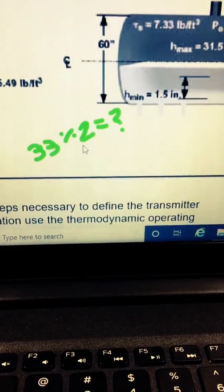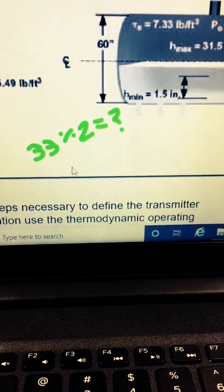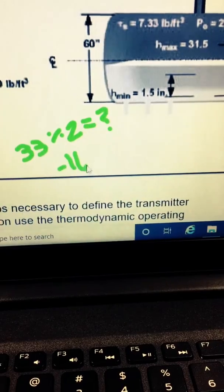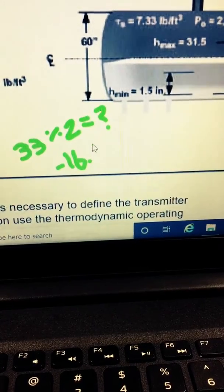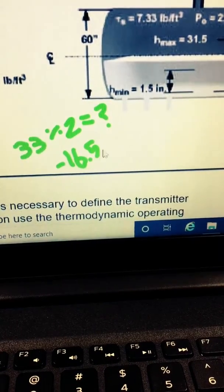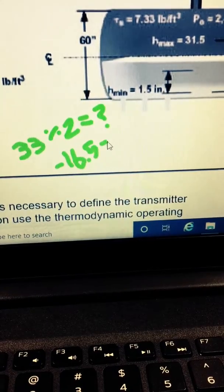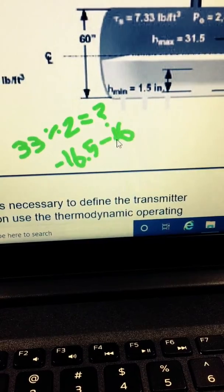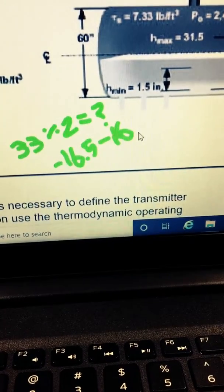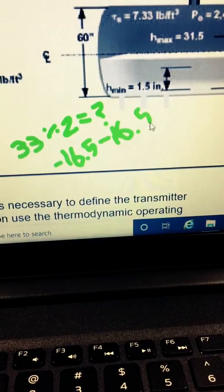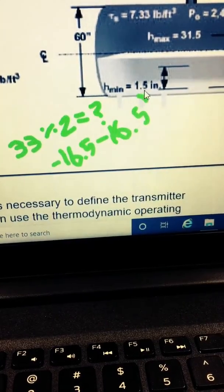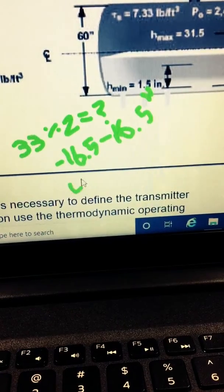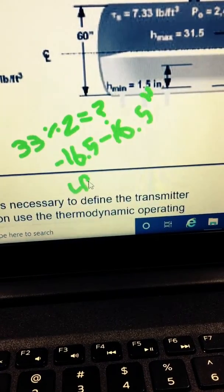So, 33 divided by 2 is what? Negative 16 and a half inches. Two. Sixteen and a half inches. That'll give us a 33 inch difference. Easy day.